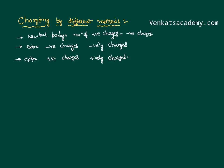How can we charge these bodies? As we have discussed earlier, there are different methods. Charging by friction — we have discussed this earlier. When a glass rod is rubbed with a silk cloth, one body will lose electrons and the other body will gain electrons. Therefore, we can say charge is conserved: neither created nor destroyed, just transferred from one body to another.